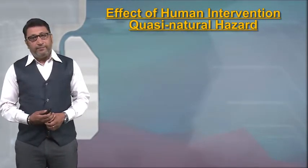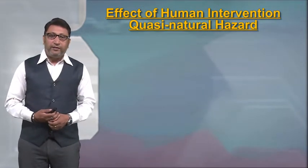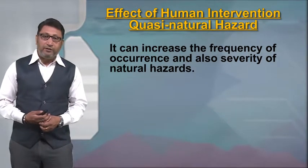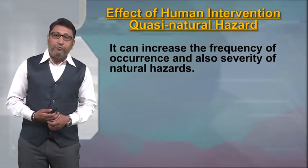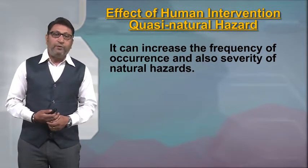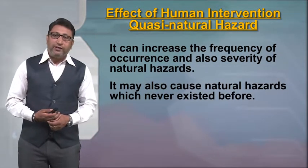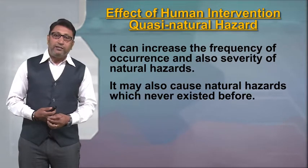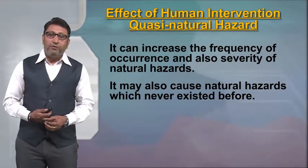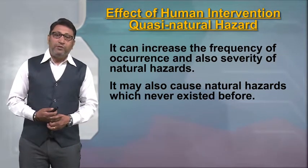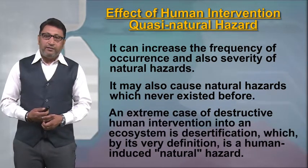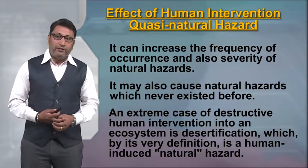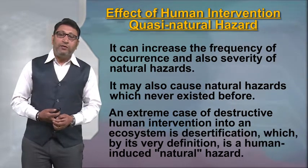There is a distinction between hazard and disaster. A natural phenomenon is not hazardous until it poses a threat to human life, property, infrastructure or the environment. If it goes beyond this, adversely affecting livelihood and economy, and resources are not within the means of the people to manage the situation, then it can be termed a disaster. The extreme case of destructive human intervention into an ecosystem is desertification, which by its very definition is a human-induced natural hazard.